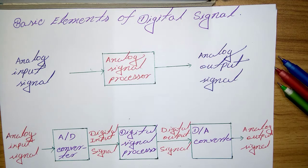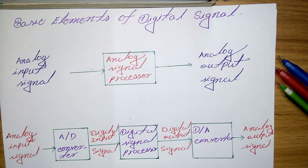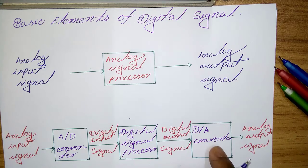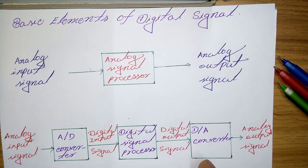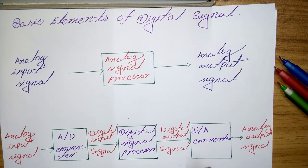Consequently, programmable signal processors are in very common use. Such an interface is called a Digital-to-Analog Converter, or DAC. Thus, the signal is provided to the user in analog form, as shown in the block diagram.